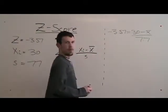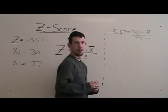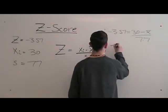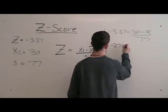The first thing you do is multiply 3.57 times 7.7, which is negative 27.49.